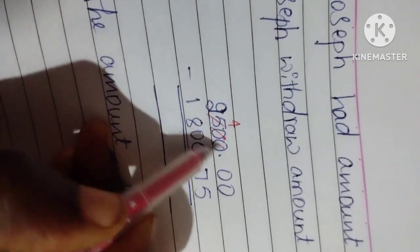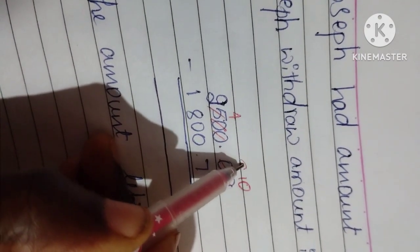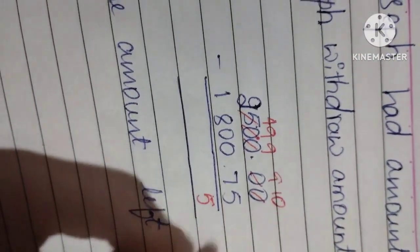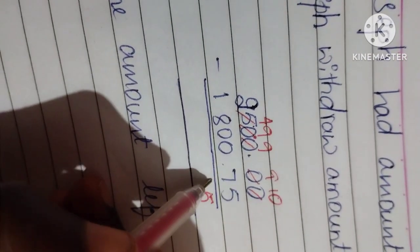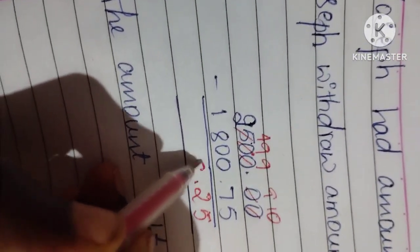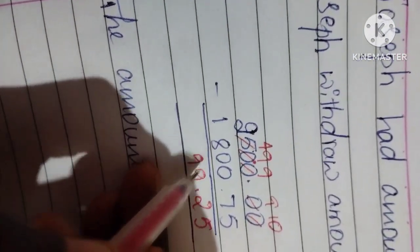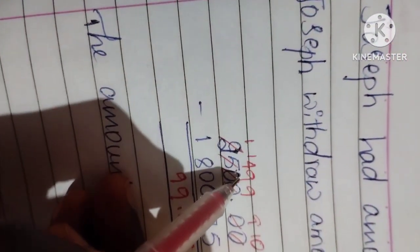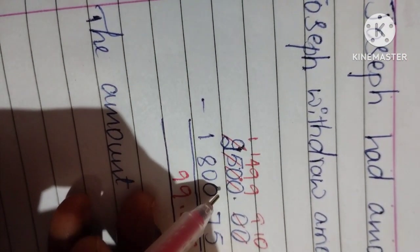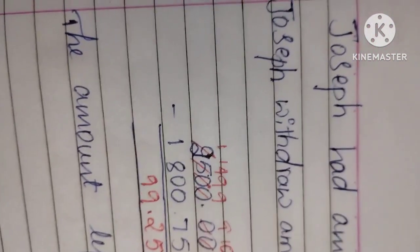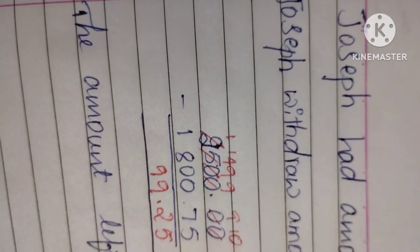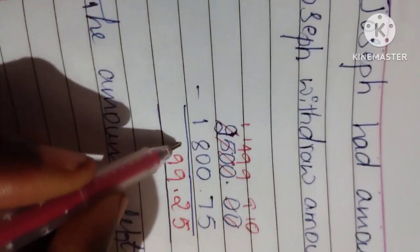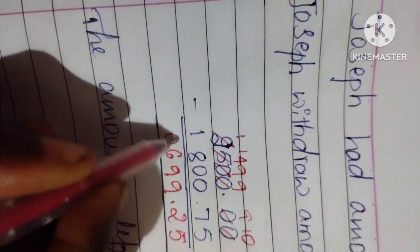10 minus 5 is 5. 9 minus 7 is 2. 9 minus 8 is 1. 4 minus 8 can't go. So you can take borrow: 14 minus 8 is 6. 1 minus 1 is 0.